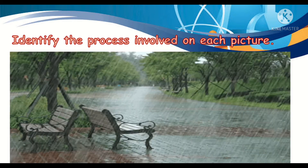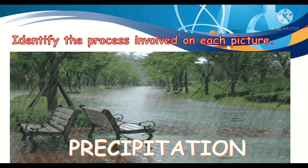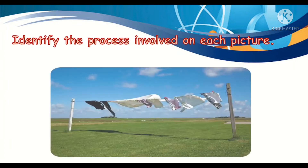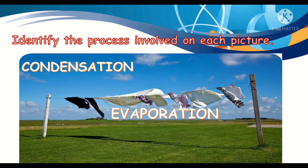Identify the process involved in each picture. Very good. The answer is precipitation. Next picture. Very good. We have evaporation when drying occurs, and we also have condensation when the liquid from the clouds is heated by the sun and becomes water vapor. Then this water vapor will form clouds.